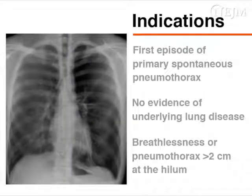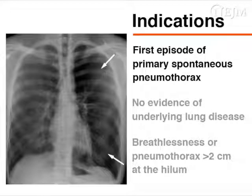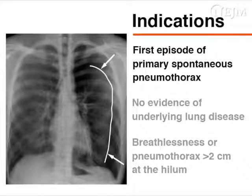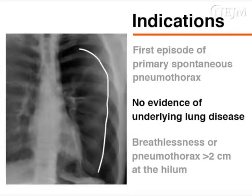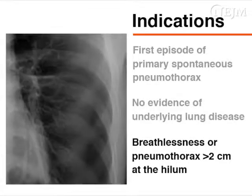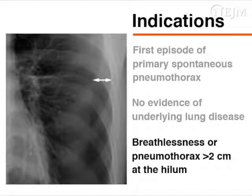Needle aspiration is appropriate for patients with their first episode of primary spontaneous pneumothorax. These patients should have no evidence of underlying lung disease and should either exhibit breathlessness or have a pneumothorax consisting of a rim of air of more than 2 cm measured at the level of the hilum.